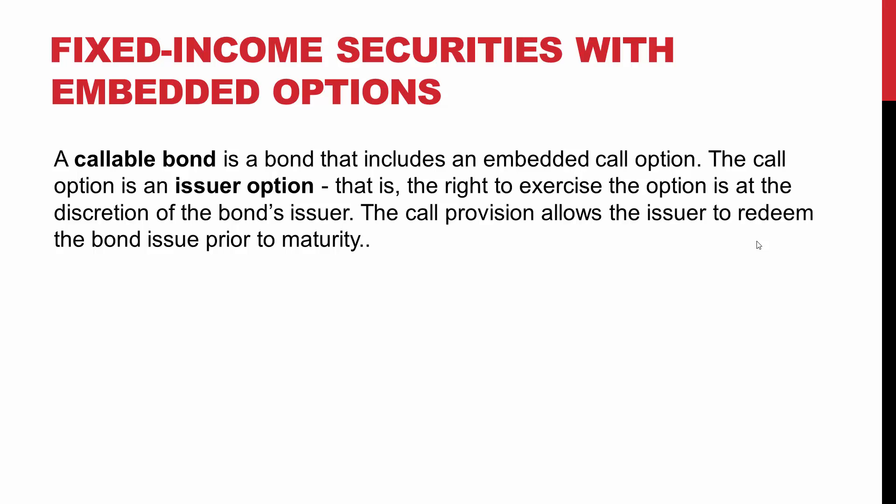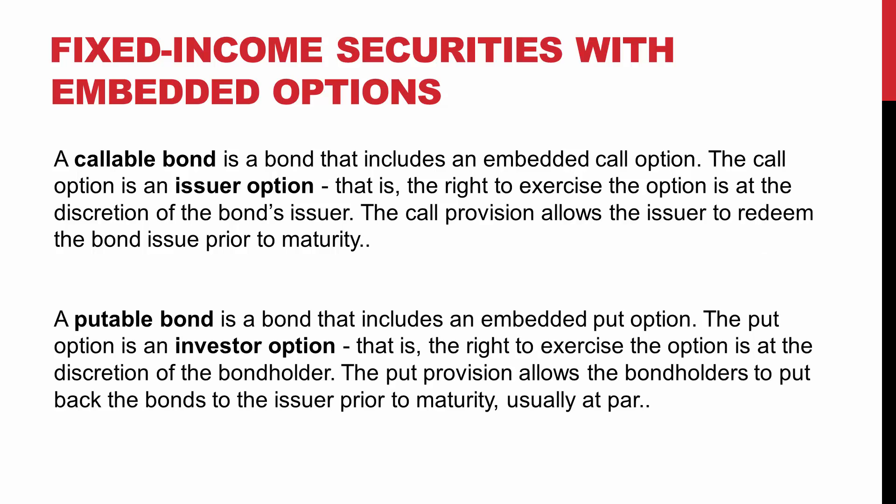Early redemption usually happens when the issuer has the opportunity to replace a high coupon bond with another bond that has more favorable terms — typically when interest rates have fallen or when the issuer's credit quality has improved. A putable bond is a bond that includes an embedded put option. The put option is an investor option, meaning the right to exercise is at the discretion of the bond holder. The put provision allows the bond holder to put the bonds back to the issuer prior to maturity, usually at par.